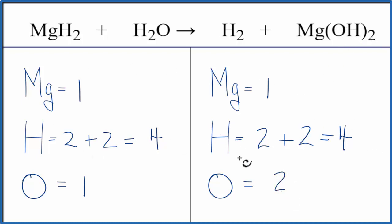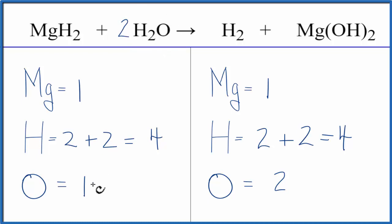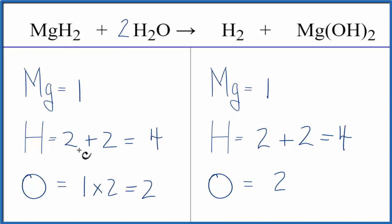So everything is balanced except the oxygen atoms. Why don't we put a two in front of the H₂O — this two will apply to everything, so we have one times two, that'll give us two oxygens. Those are balanced, and then we need to update the hydrogens.